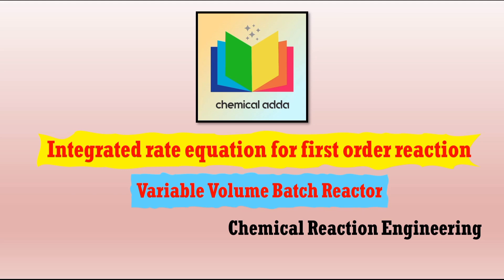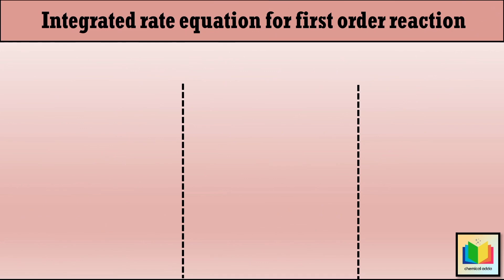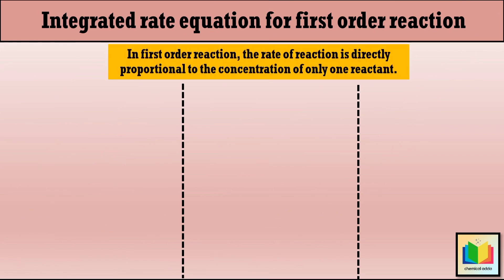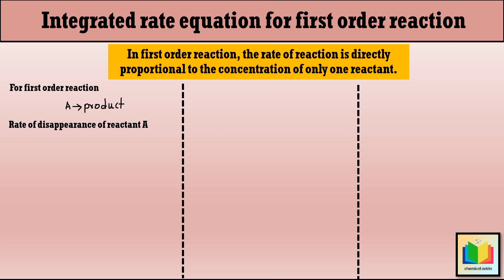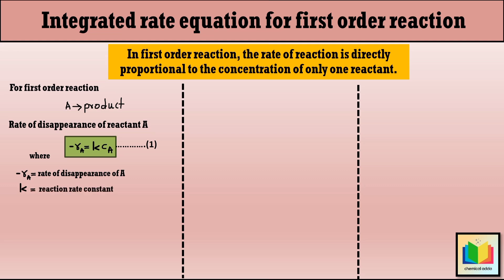Before we get into the equations and their derivations, let's first take a moment to understand what a first-order reaction is. In a first-order reaction, the rate of reaction is directly proportional to the concentration of only one reactant. Consider the reaction A gives product. Therefore, for a first-order reaction, the rate of disappearance of reactant A can be written as: minus R_A equals K·C_A (equation 1), where minus R_A is the rate of disappearance of A, K is the reaction rate constant, and C_A is the concentration of reactant A at any time T.